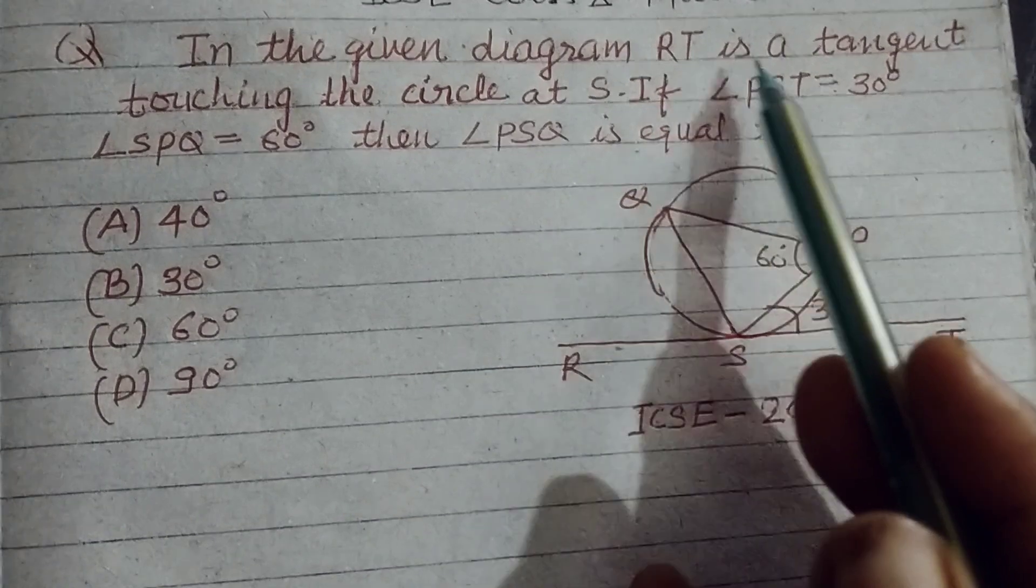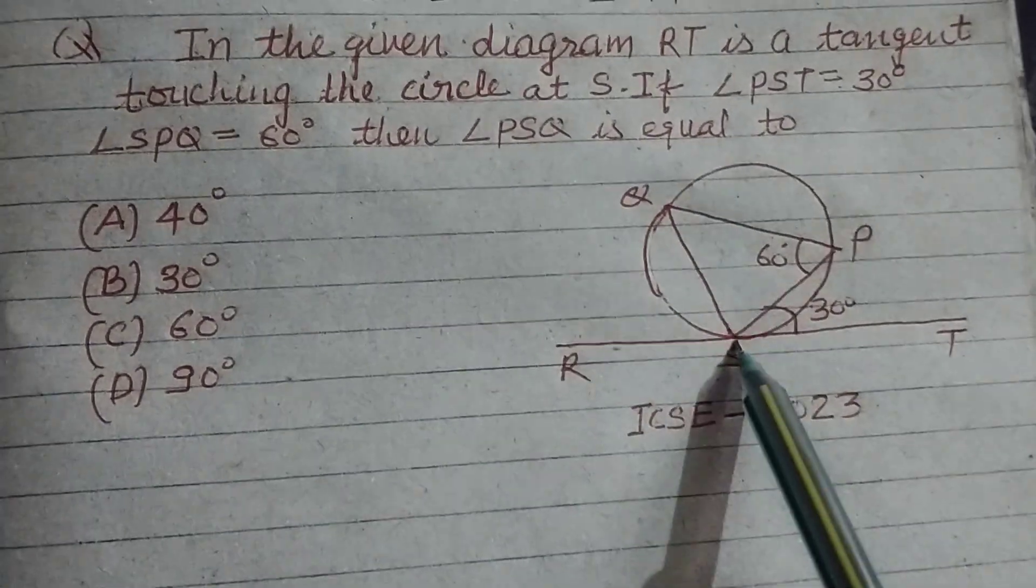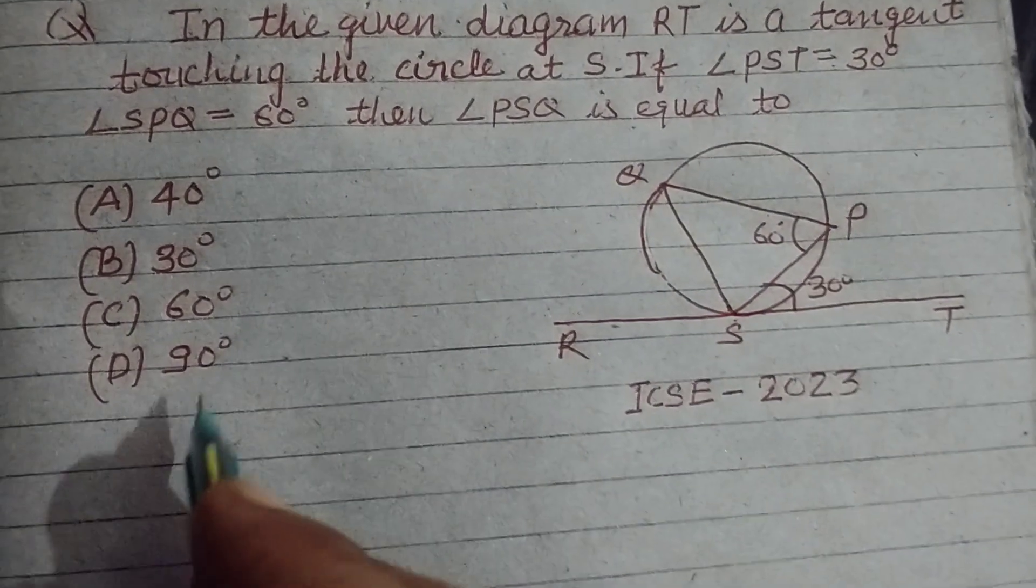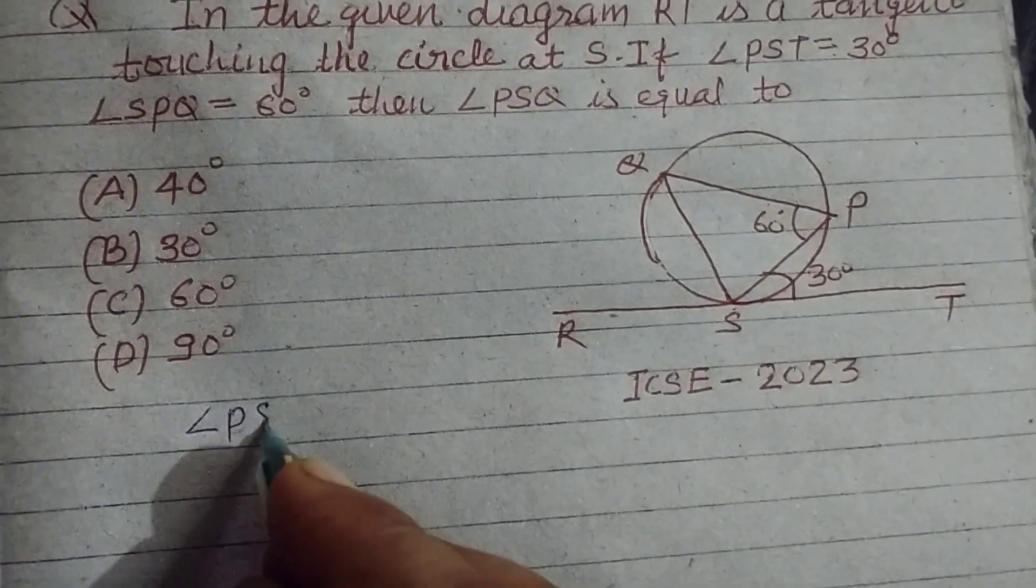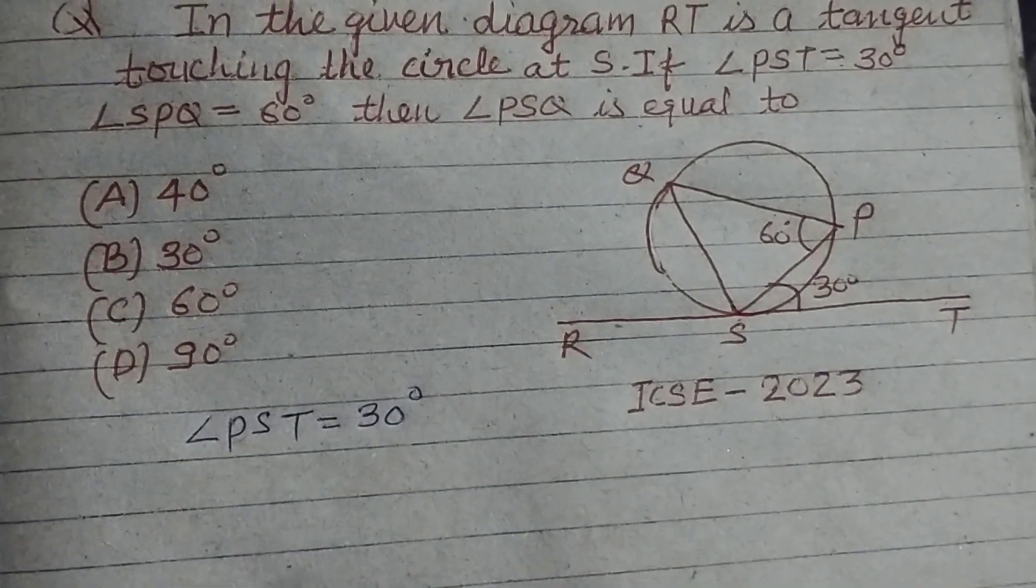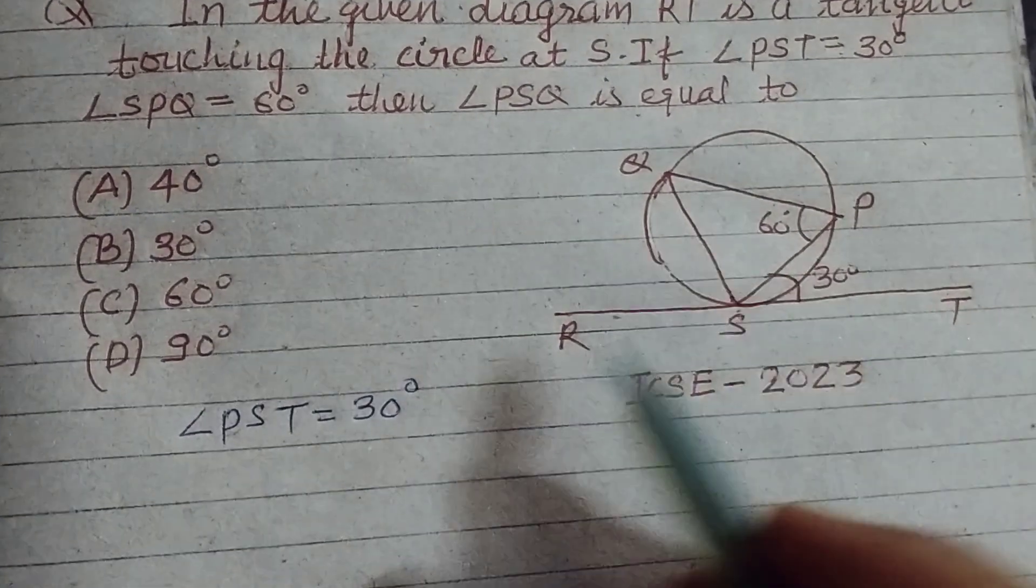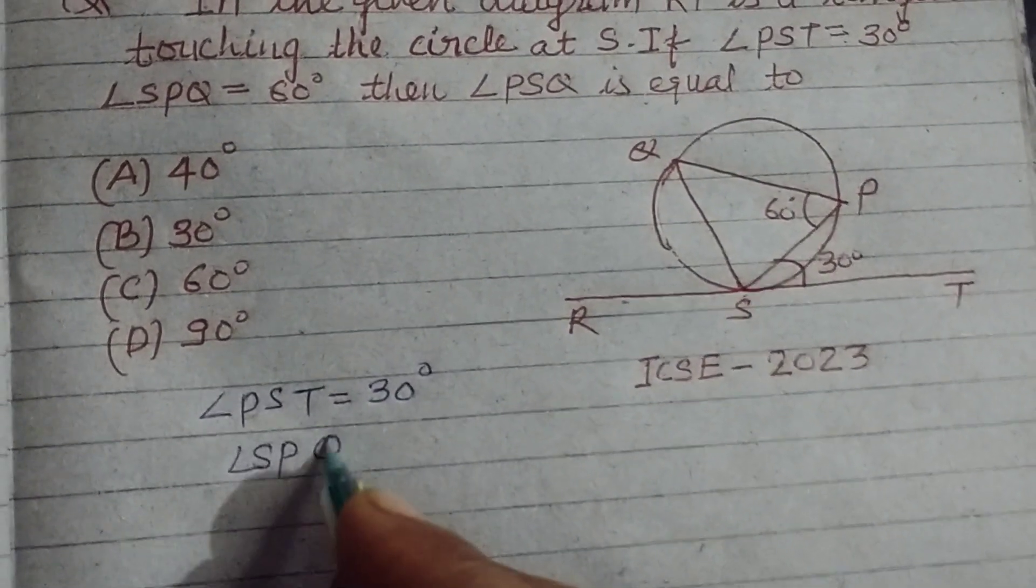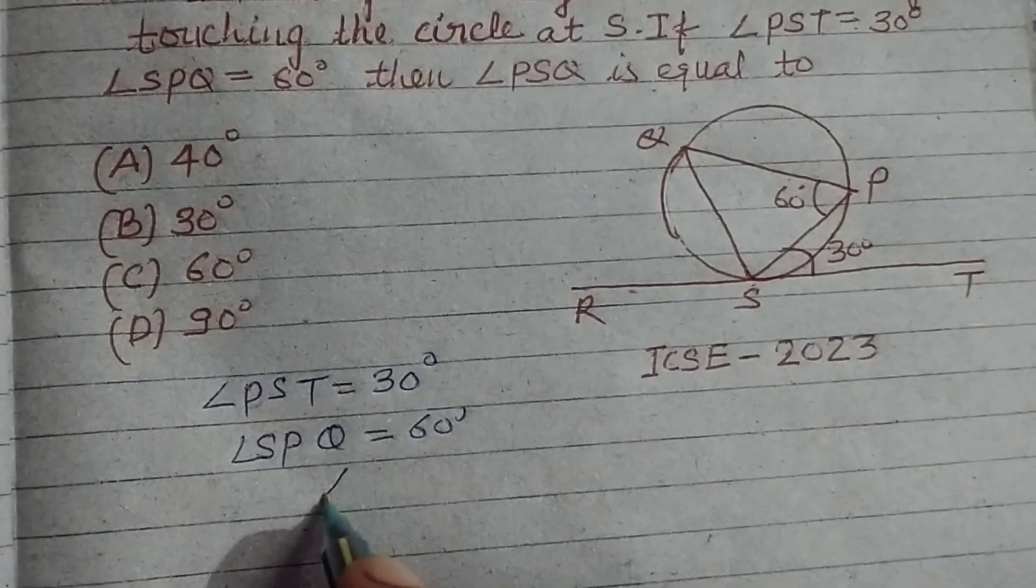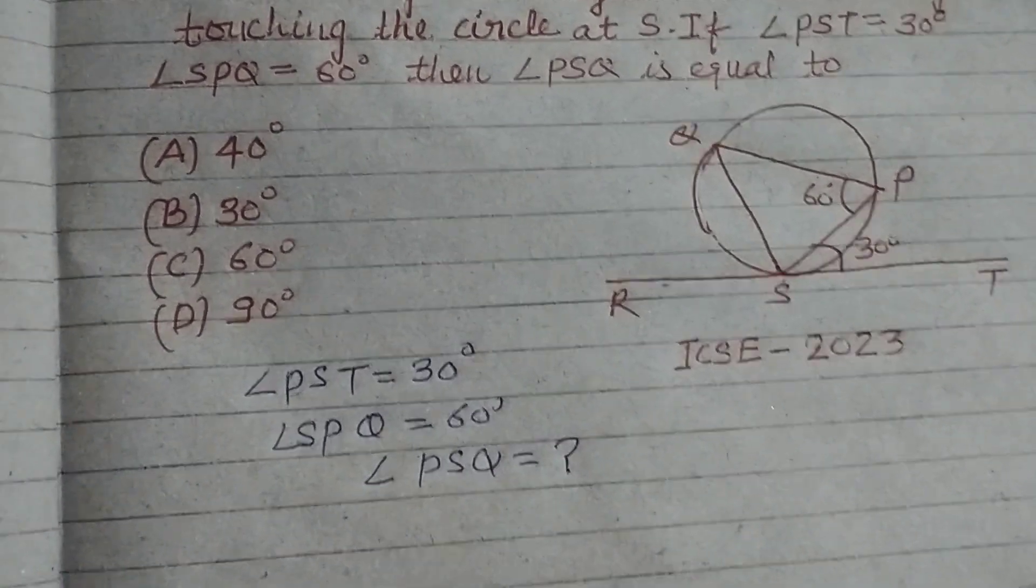In the given diagram, RT is a tangent touching the circle at S. If angle PST is given to us which is 30 degrees, and angle SPQ is given to us 60 degrees, and we require the angle PSQ.